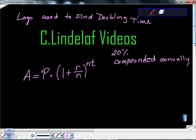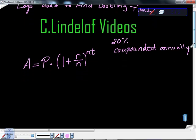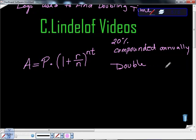What we're given in this scenario is we're asked to double our money. Our job here is to double this. They give us our interest rate and our compounding period, so we need to find the time to double.